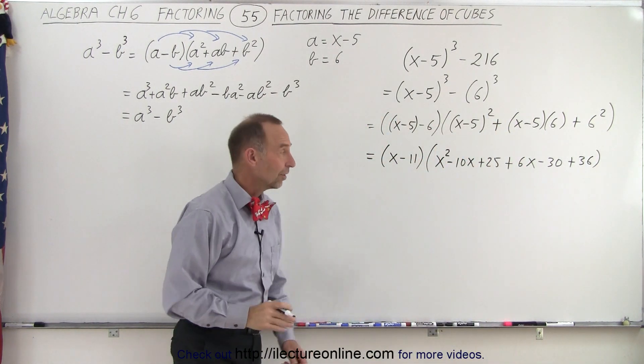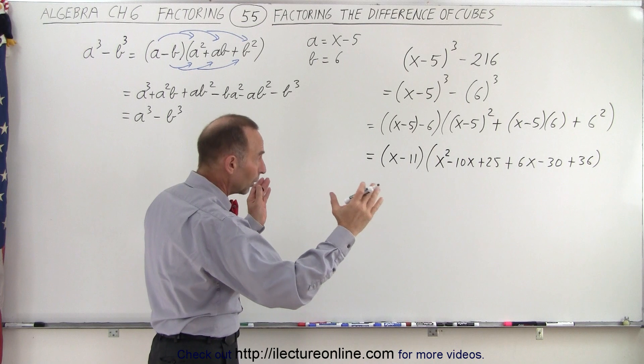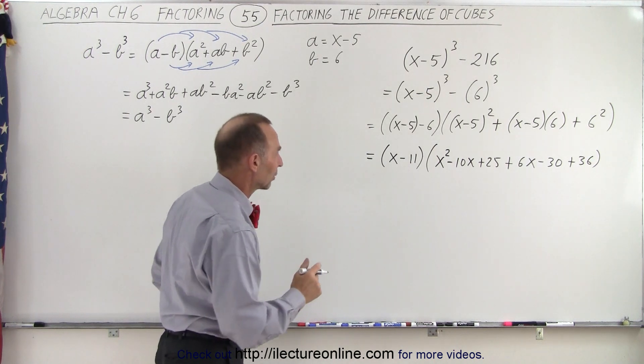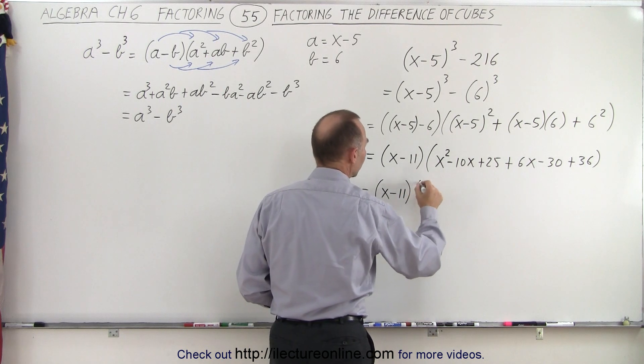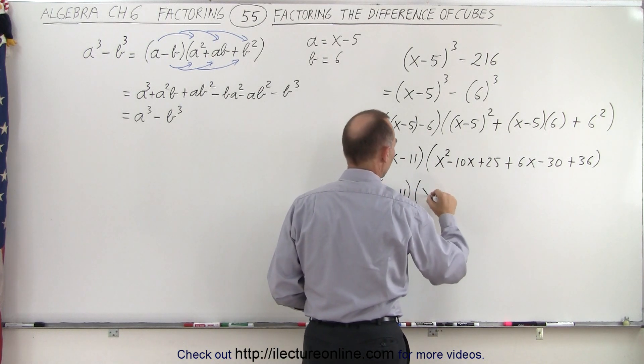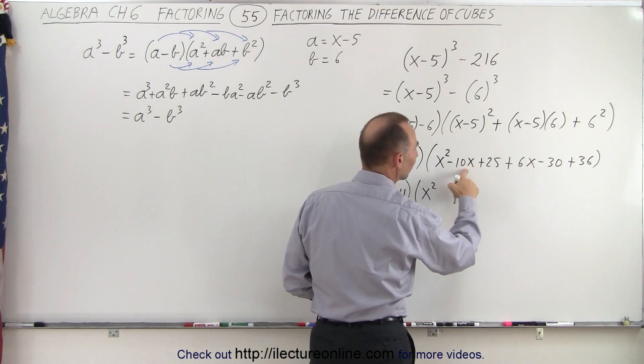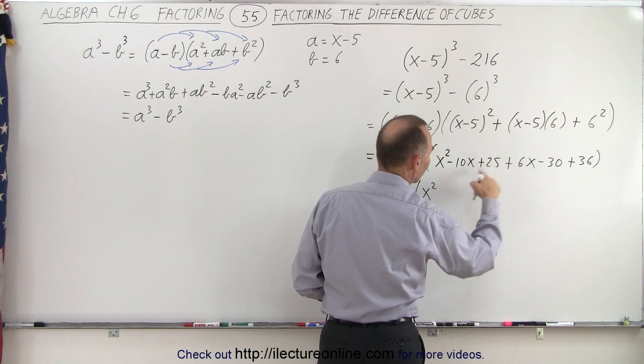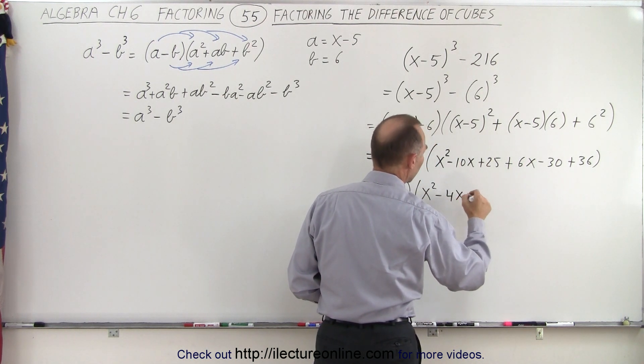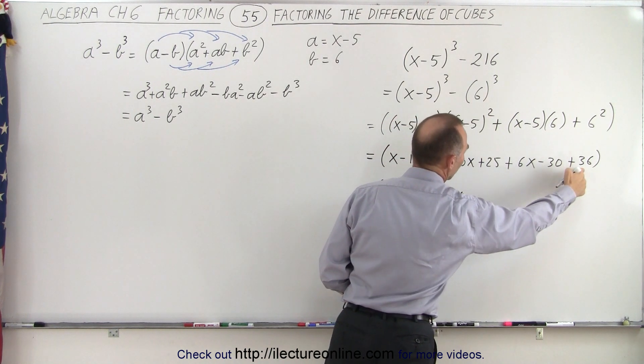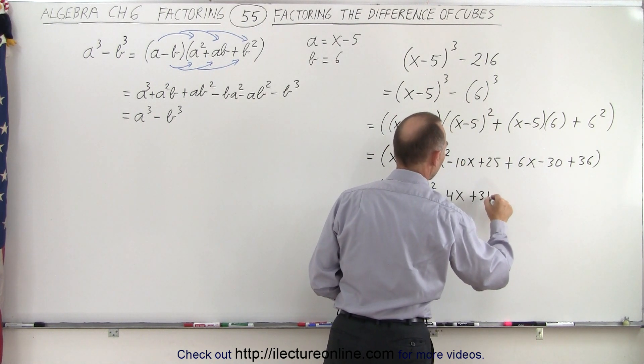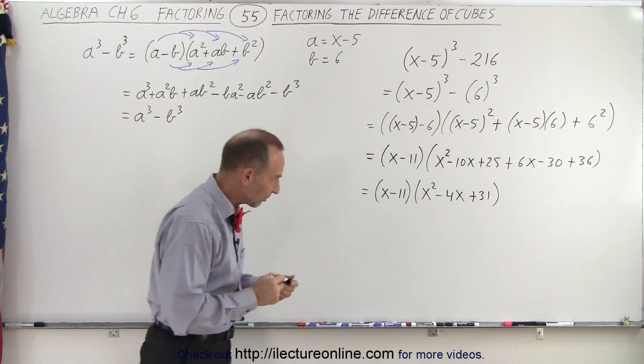All we have to do now in that long polynomial is to combine like terms. So this is equal to x minus 11 times, we only have one x squared term. Now we have a minus 10x plus 6x, that gives us a minus 4x, and plus 25 minus 30, that's minus 5, added to 36 is plus 31, and that's the final factored form.